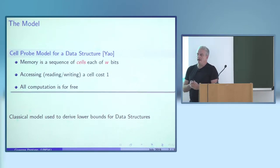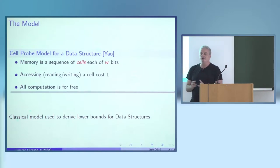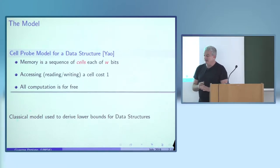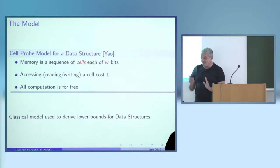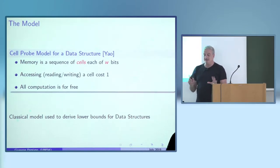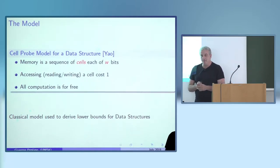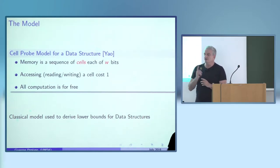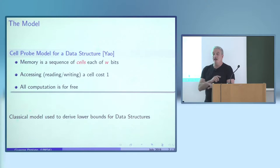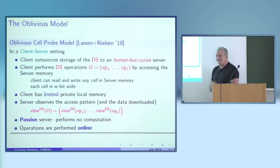I'm going to prove lower bounds in the cell probe model. This is a model due to Yao from the 70s or 80s, where memory is seen as a sequence of cells of a fixed number of bits w, and the cost is just accessing the cells — one per direct access — while all other computation is free. This is a very good model for lower bounds.